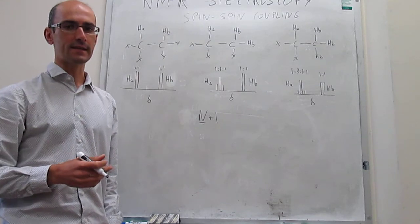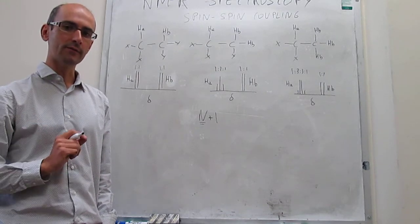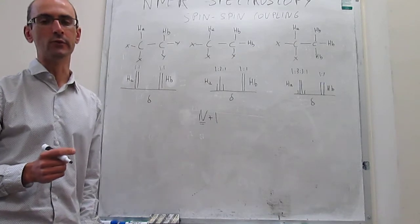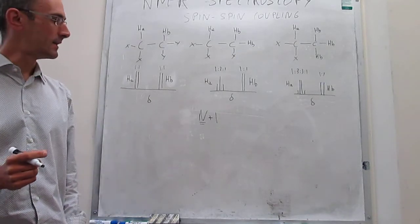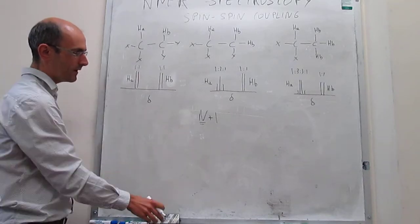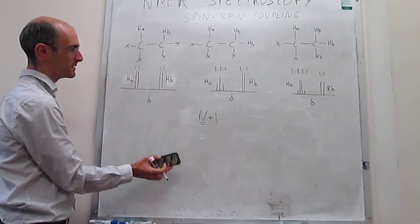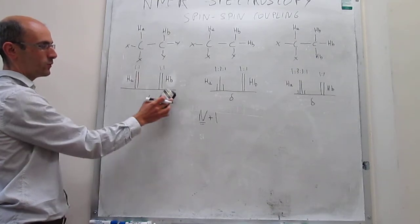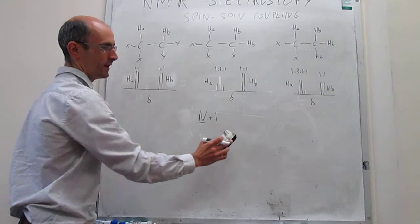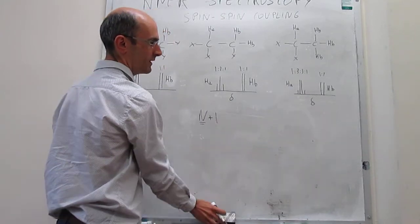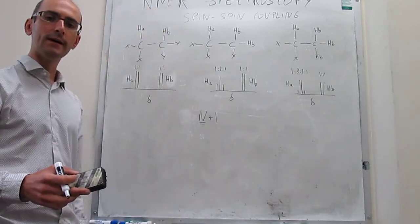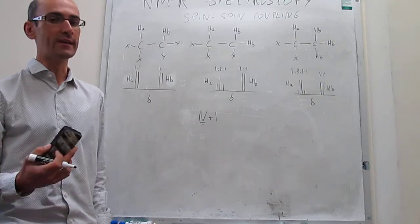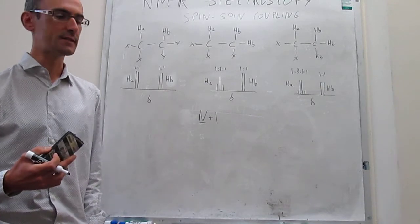The last thing is that only NMR-active nuclei are able to split signals. Other atoms that are not NMR-active will not be able to split signals. So then the question is: what about the relative intensities? We have that for doublets the relative intensities are one-to-one, triplets one-to-two-to-one, quartets one-to-three-to-three-to-one. Is there a way to predict these intensities for any generic type of splitting?